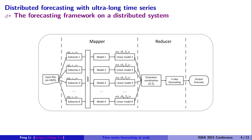For a distributed system, forecasting is not as simple as a single-machine workflow because files are stored in HDFS — the Hadoop Distributed File System. One has to partition data sequentially into sub-blocks, then apply the MapReduce technique for each sub-model with different parameters, and finally the reducer combines all estimators to produce the final forecast output.